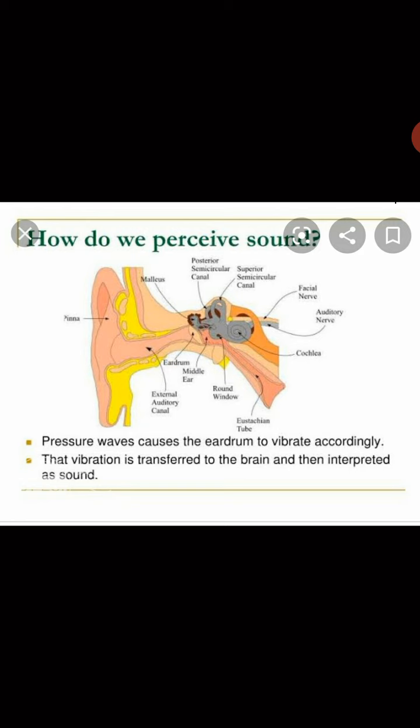Now, how does our ear perceive sound? There are more minute parts of the inner ear shown in this image. The ear feels like a simple, small organ, but it has many sub-parts each with its own function. When sound waves pass in the form of vibrations, pressure is created on those sound waves, and due to that pressure the eardrum vibrates. This vibration is then transferred to the brain by the auditory nerve, and that is how we perceive sound.